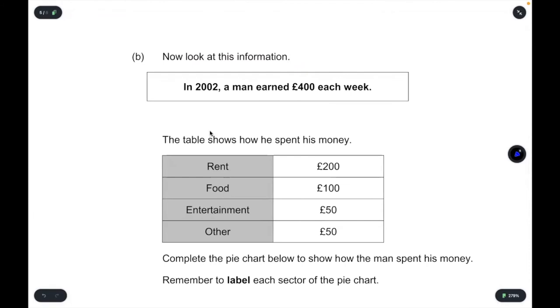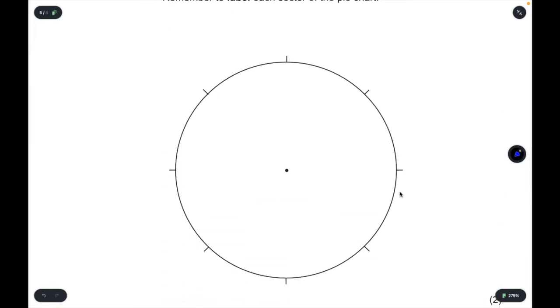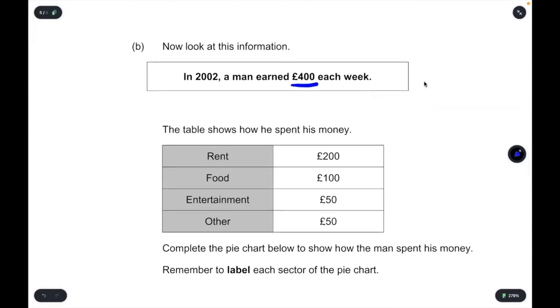Part B is related to part A. It says, now look at this information. In 2002, a man earned 400 pounds each week. The table shows how he spent his money. So 200 pounds was spent on rent, 100 on food, 50 on entertainment, and 50 was categorized as other expenses. All of these, you'll notice, adds up to the 400, which is the total amount of money that he spent. Now it says, complete the pie chart below to show how the man spent his money. Remember to label each sector of the pie chart. So now we're given an empty pie chart, and it's up to us how we label this.